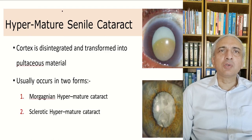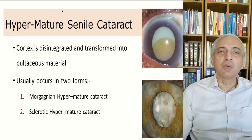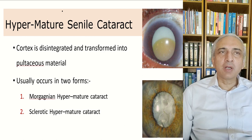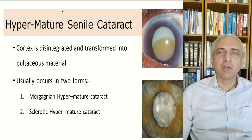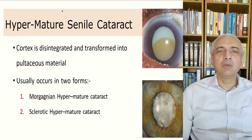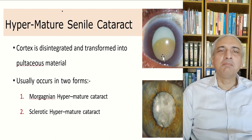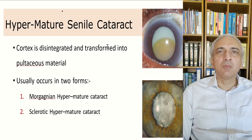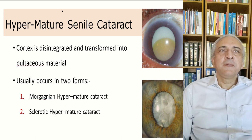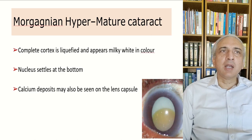In hypermature senile cataract, not all cases progress to phacomorphic glaucoma. In some, the cortex disintegrates and liquefies into a poraceous material. This occurs in two forms. In the Morgagnian cataract, the cortex is liquefied, and the brownish-colored nucleus has sunk to the back. Alternatively, a sclerotic hypermature cataract can develop, in which the capsule becomes thick and wrinkled while the cortex remains intact.